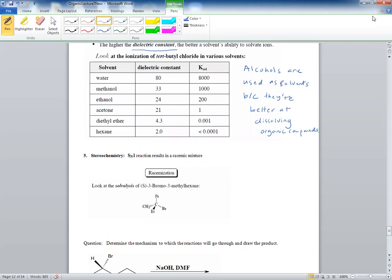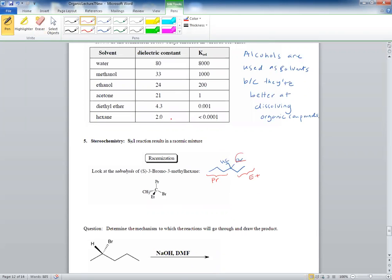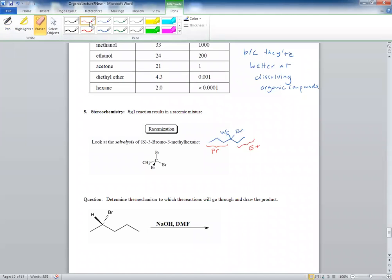That's the bromine, and there's a CH3 here. I'm showing you the four groups we put here. This would be your propyl group, this is your methyl group, and this is your ethyl group. And you have your bromine and your methyl.